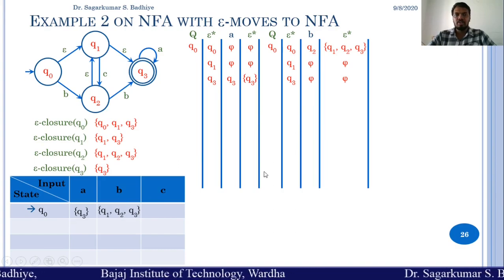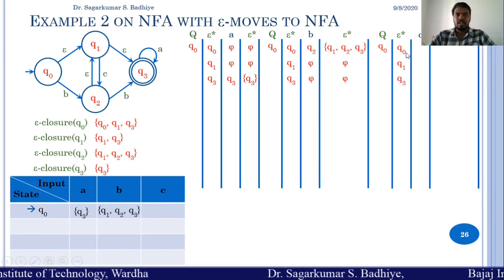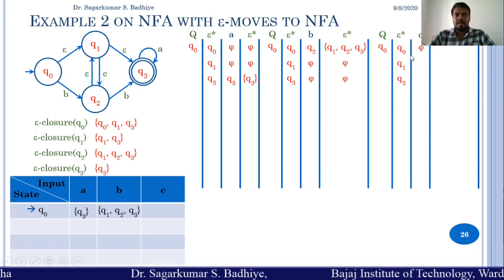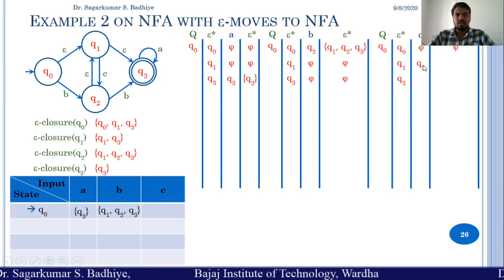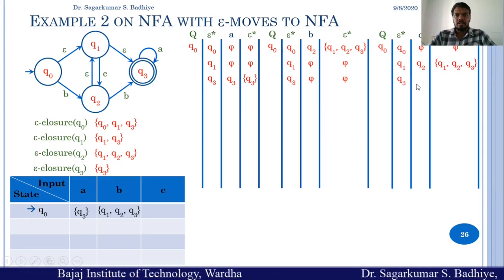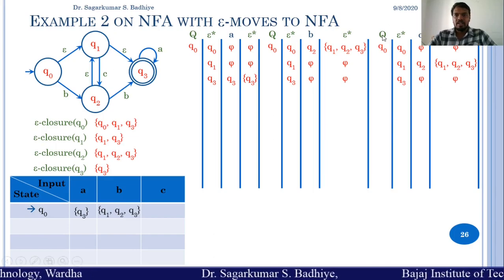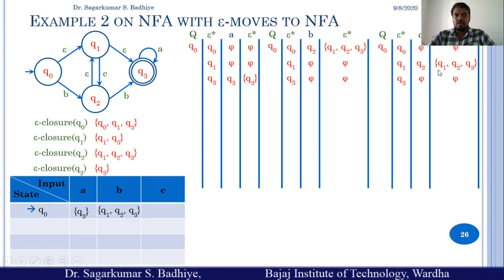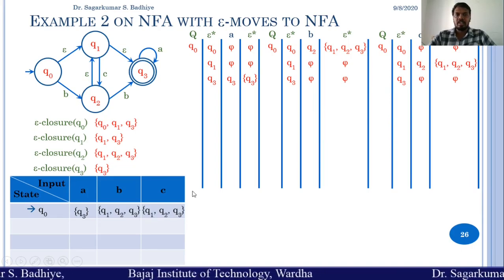Now we compute Q0 on C. Epsilon closure of Q0 is Q0, Q1, Q3. Q0 on C has no transition — phi. Q1 on C goes to Q2, and epsilon closure of Q2 is Q1, Q2, Q3. So in the equivalent NFA, Q0 on input C goes to either of the states Q1, Q2, or Q3.